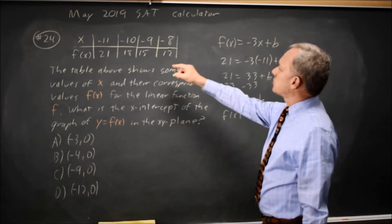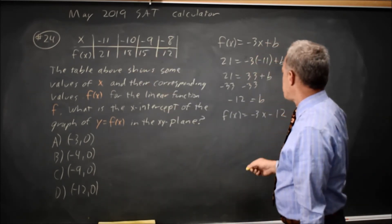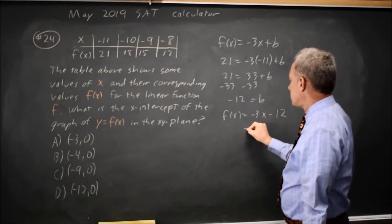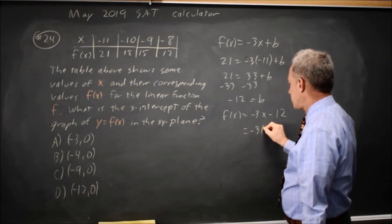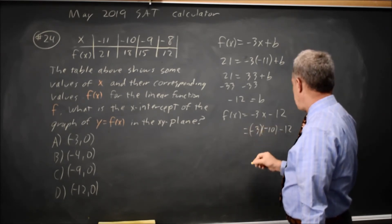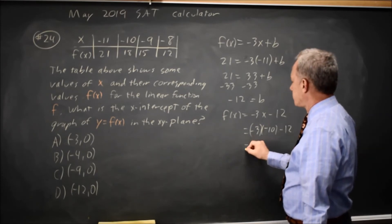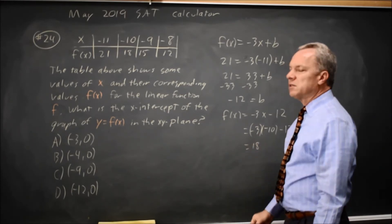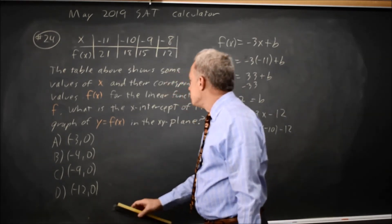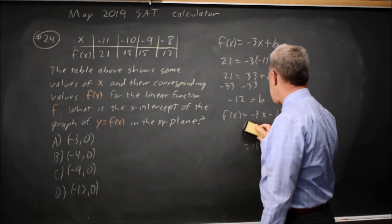Let me try x = -10. That would be f(x) = -3 times -10 is 30, minus 12 is 18, and that works. So I found that two points are on the equation of this line, the one I used to find b, and this one I just checked.